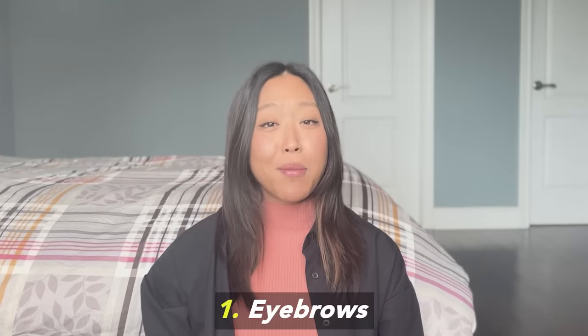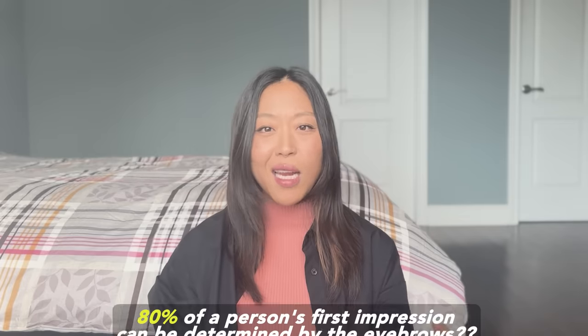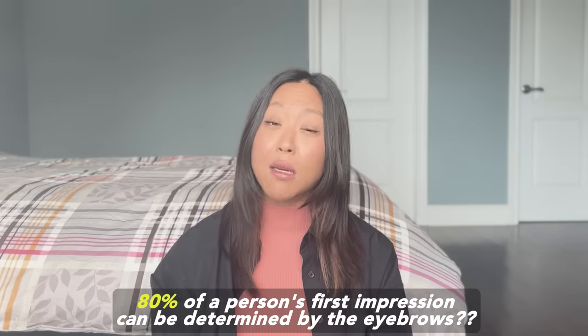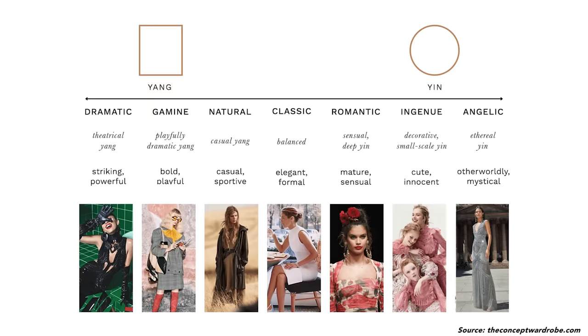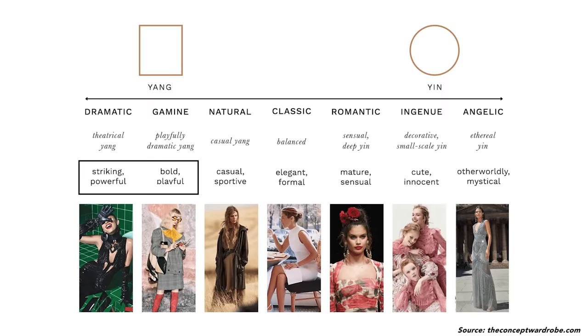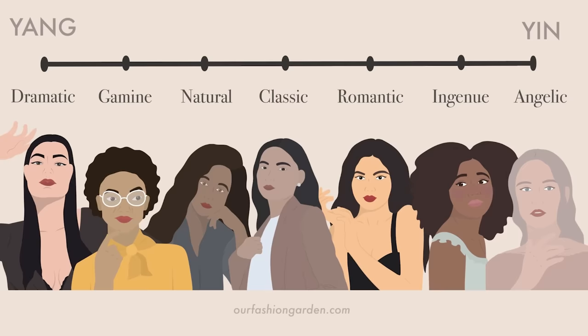The first feature I want to talk about is eyebrows. As I've mentioned in my previous series on eyebrows, they have such a big impact on determining the overall impression of the face. Some people say that 80% of a person's first impression can be dictated by the eyebrows. The style essences are all about how you're perceived, based on a balance between your yin and yang energies — how sharp, bold, or intense you come across versus how soft and delicate you appear. Dramatics are supposed to be the boldest and most intense because they're on the most yang side of the spectrum.